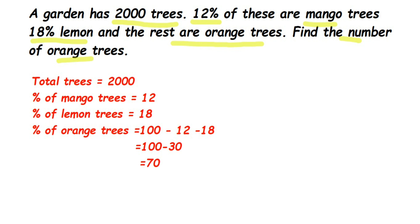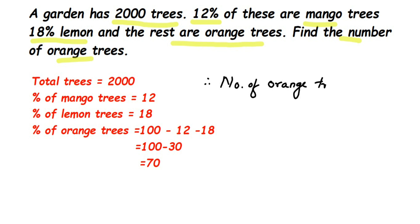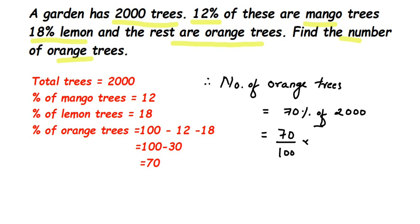We've found the percentage, but we need the actual number of trees. Since there are 2000 trees in the garden and 70% are orange trees, we calculate 70% of 2000. That means 70 divided by 100, multiplied by 2000.